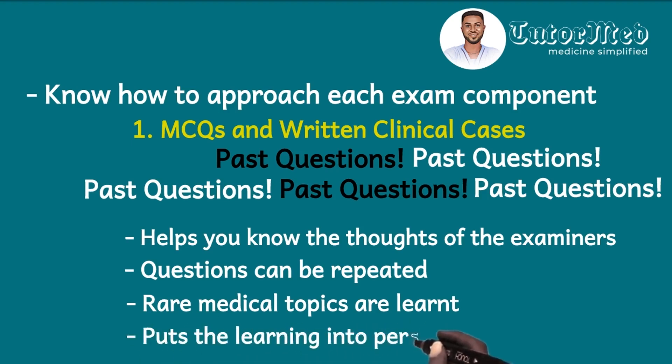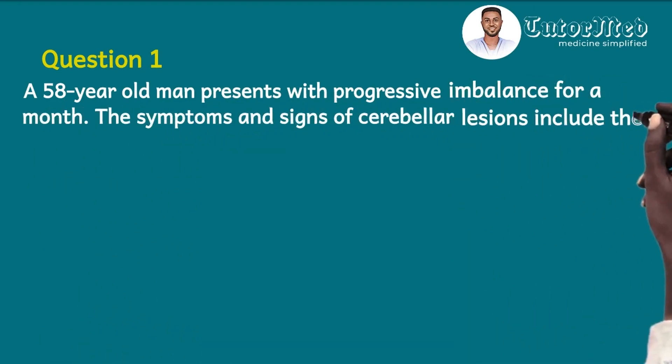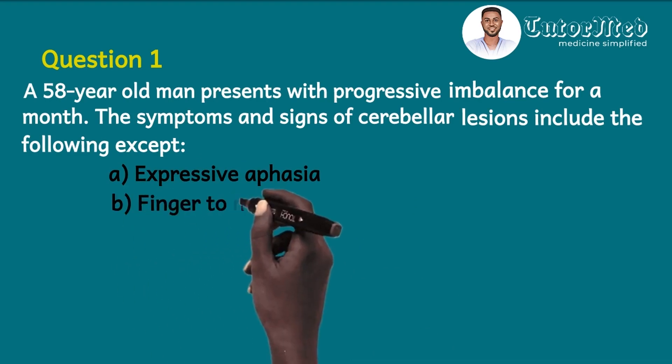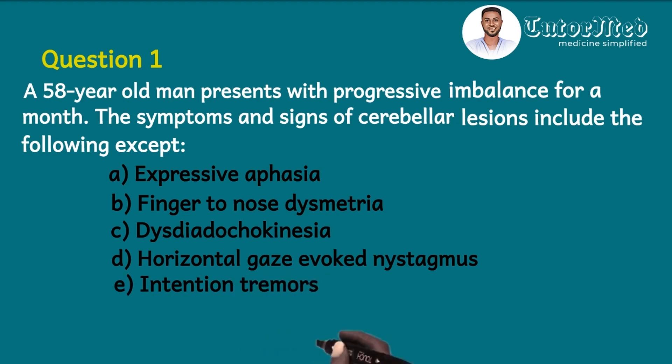Now as a demonstration, let us look at this past question: A 58-year-old man presents with progressive imbalance for a month. The symptoms and signs of cerebellar lesions include the following except: A, expressive aphasia; B, finger to nose dysmetria; C, desdiadochokinesia; D, horizontal gaze evoked nystagmus; E, intention tremors.